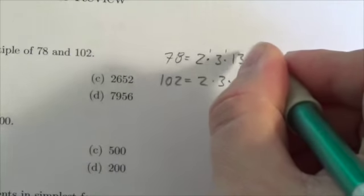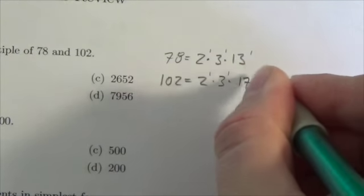So for 78, this is 2 to the 1, 3 to the 1, 13 to the 1, and for 102, it's 2 to the 1, 3 to the 1.